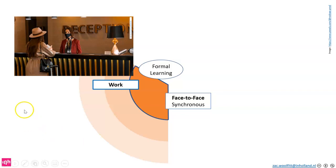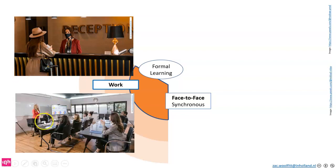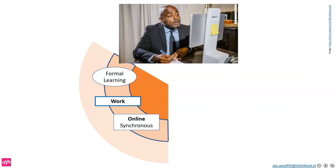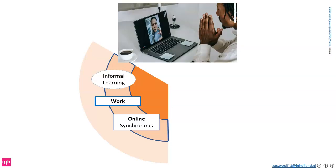Formal learning at work would look like actually carrying out your job — working as an assistant or a receptionist, getting feedback on the skills you're doing — or attending an official training workshop at work where you can interact live with the trainer. Moving online at work synchronously, formal learning might be following a Teams meeting where you have training, can ask questions, and need to pass a course to get a certificate. Informal learning could be just hanging out with colleagues chatting and discussing, learning quite a lot about the company in an online synchronous environment.